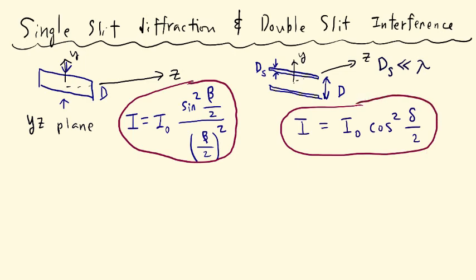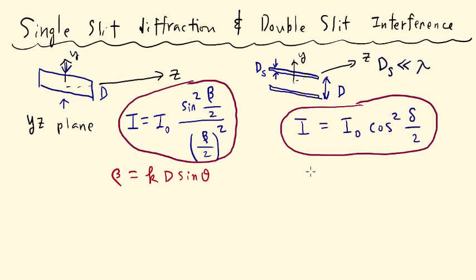The important quantity is this phase shift: beta equals k times D times sine theta. The physical meaning of beta is the phase difference for the two light rays that appear on the screen — one light coming from the lower edge and the other coming from the upper edge of the single slit. You consider those two light rays and look at the phase difference between them.